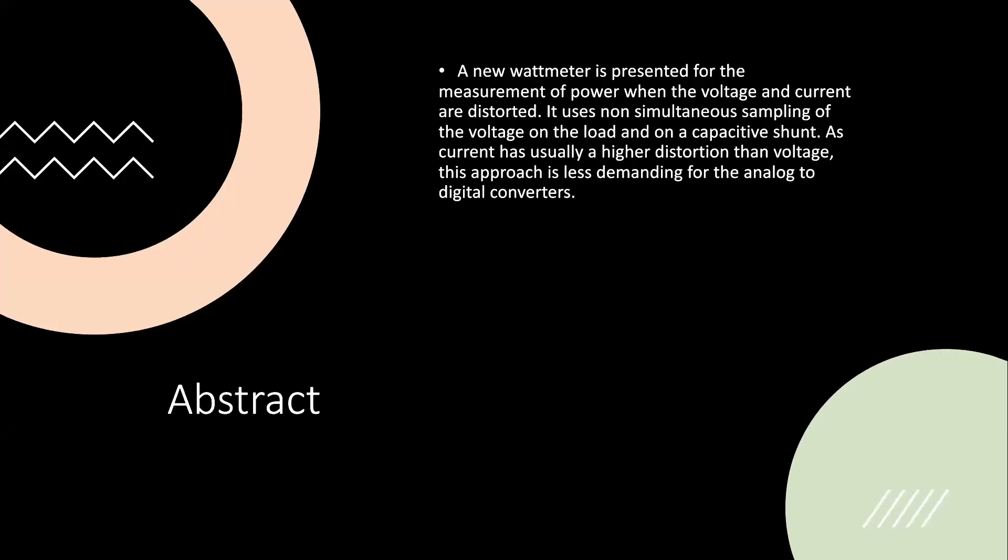A new wattmeter is presented for the measurement of power when the voltage and current are distorted. It uses non-simultaneous sampling of the voltage on the load and on a capacitor. As current usually has higher distortion than voltage, this approach is less demanding for the analog to digital converters.